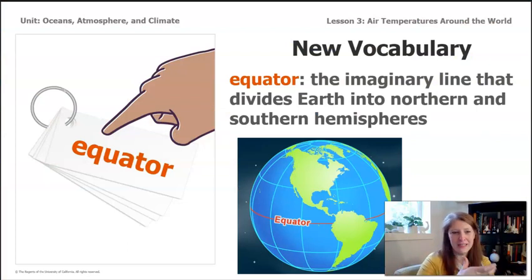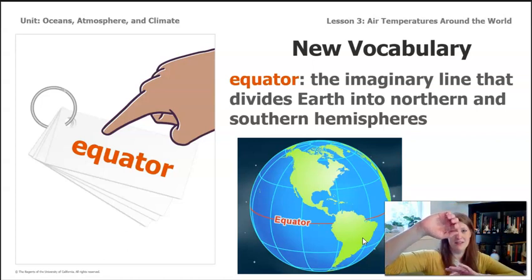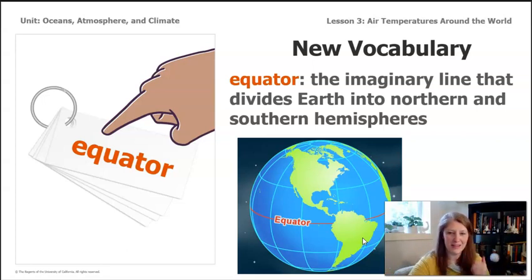So as we're getting started, there's a new vocabulary word that we need to learn, which is equator. And maybe it's one that you already know, but there's a picture here of the planet, and there's a red line here that says equator. Equator is just an imaginary line that divides Earth into a northern and a southern hemisphere. So, as we're thinking about the planet, everything north of the equator is in the northern hemisphere, and everything south is in the southern hemisphere.